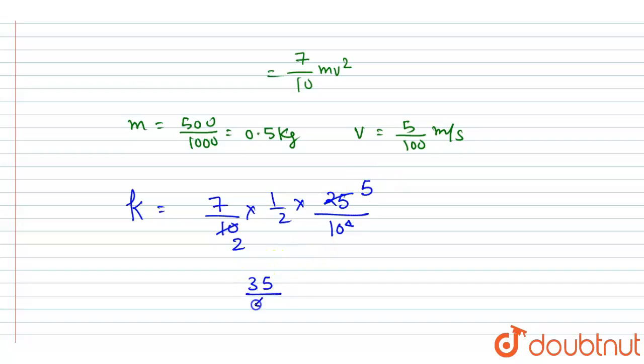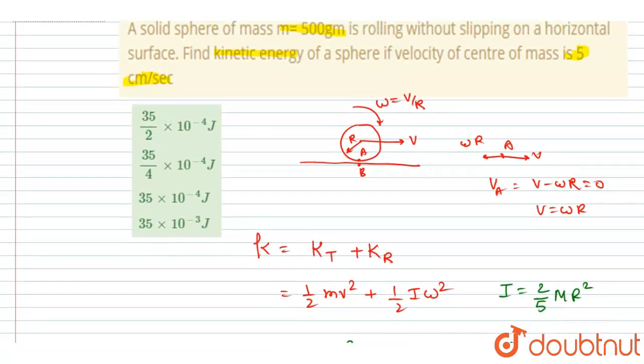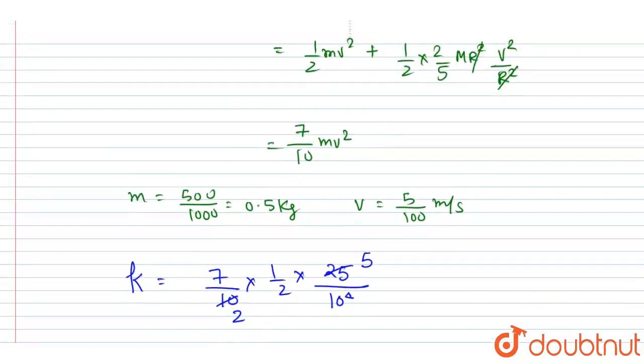Now if you can see here, this will get cancelled out by 2 and this will be 5. So you will write 35 by 4 into 10 to the power minus 4 joule as the total kinetic energy. So now you can see the correct option here will be 35 by 4 into 10 to the power minus 4 joule...